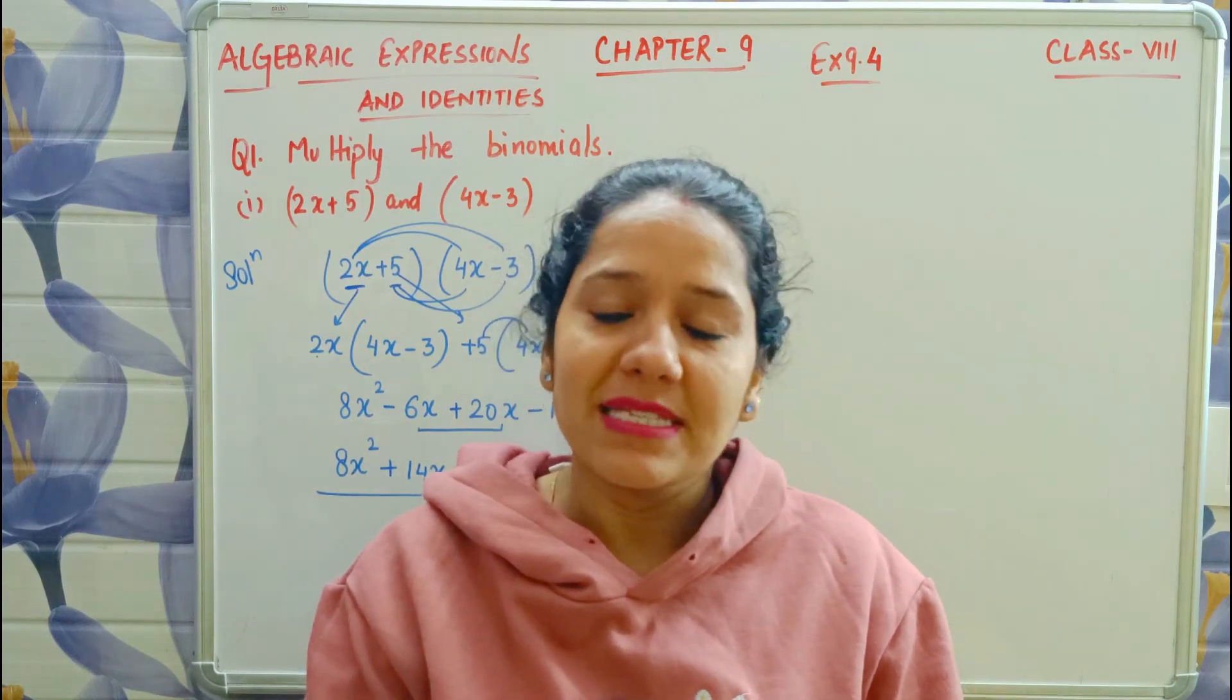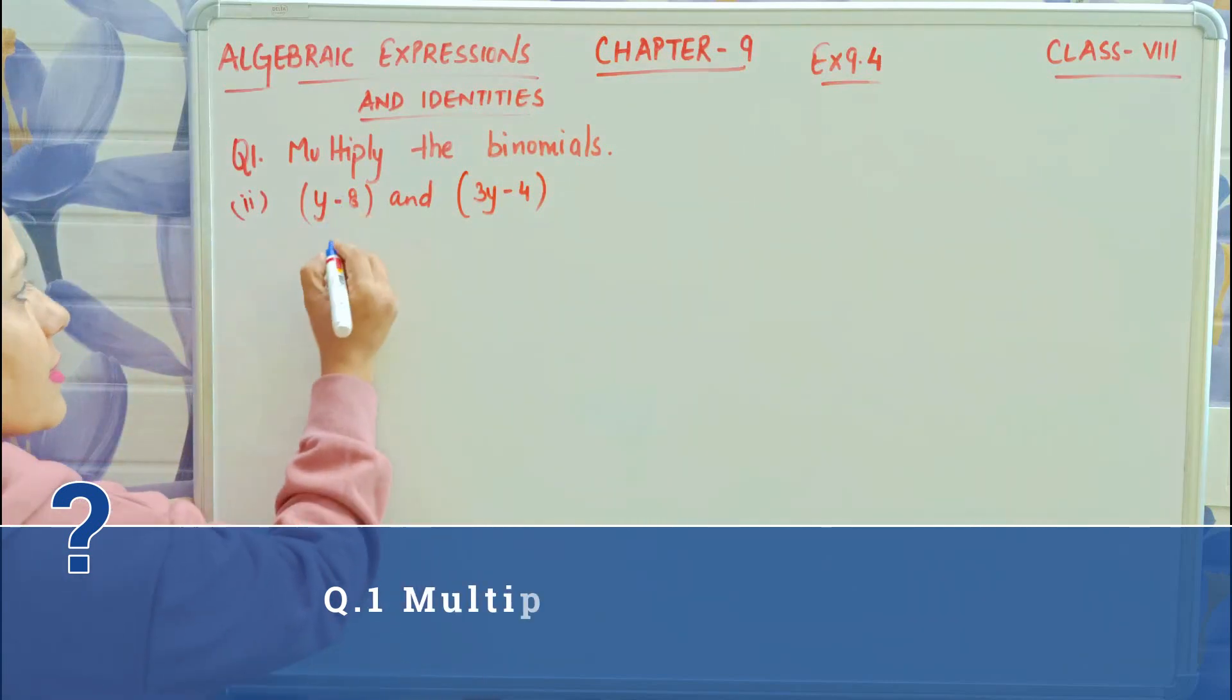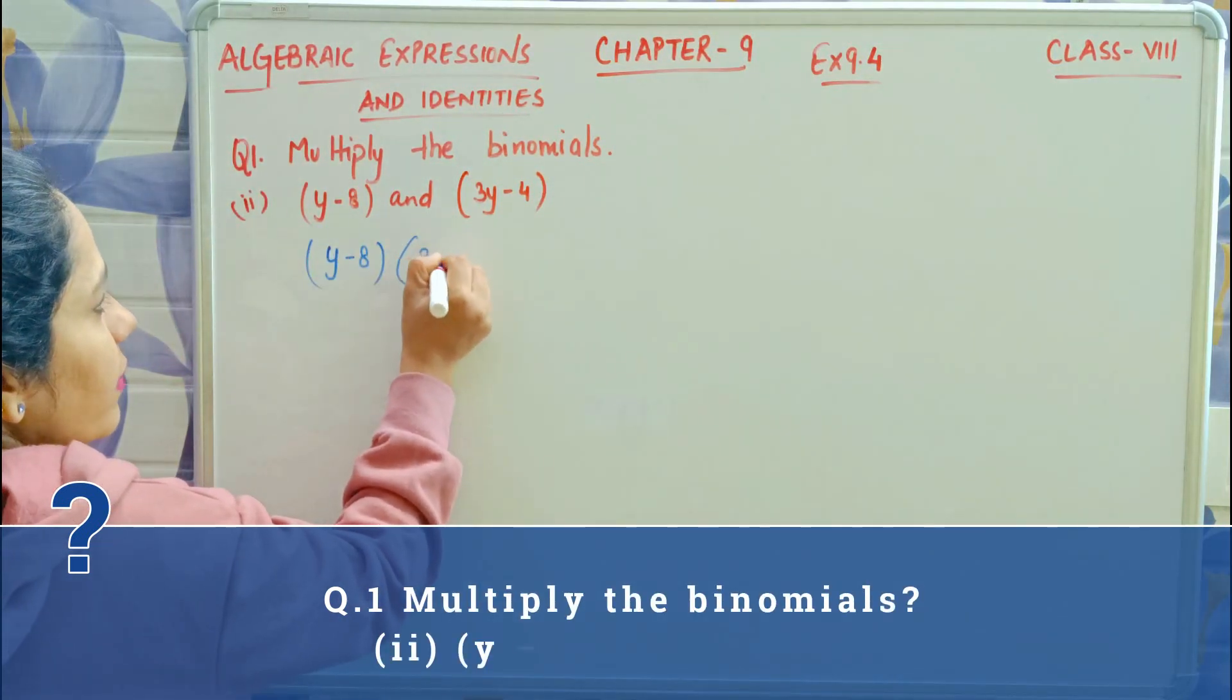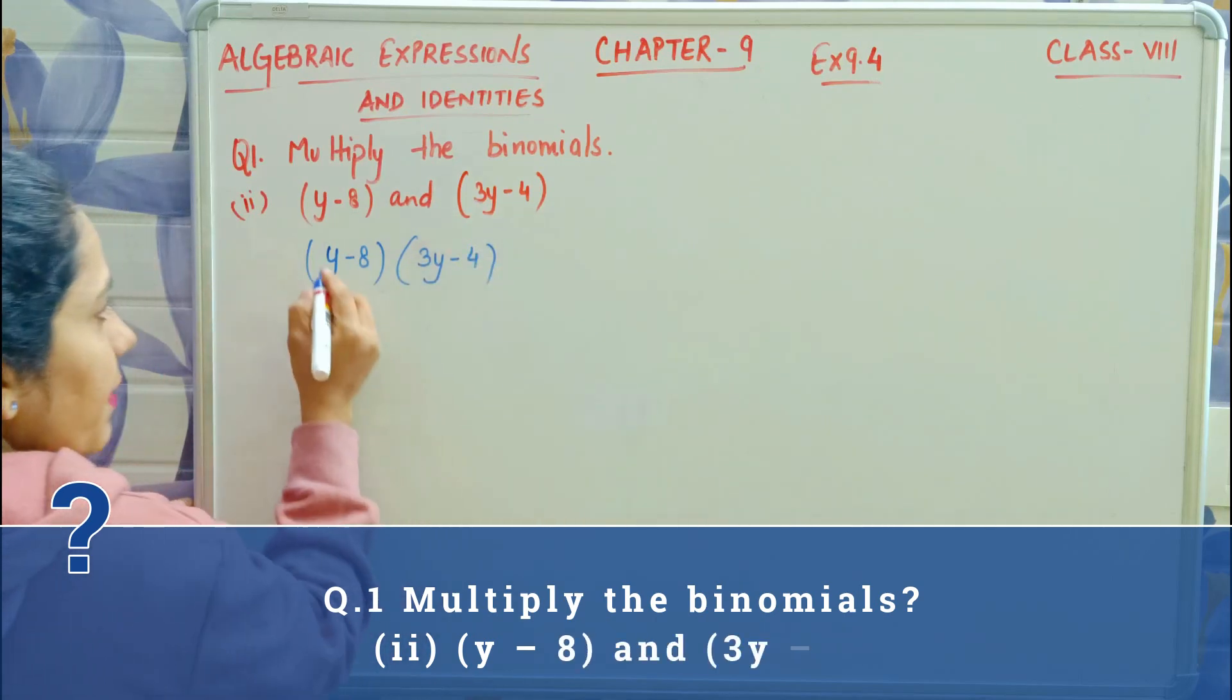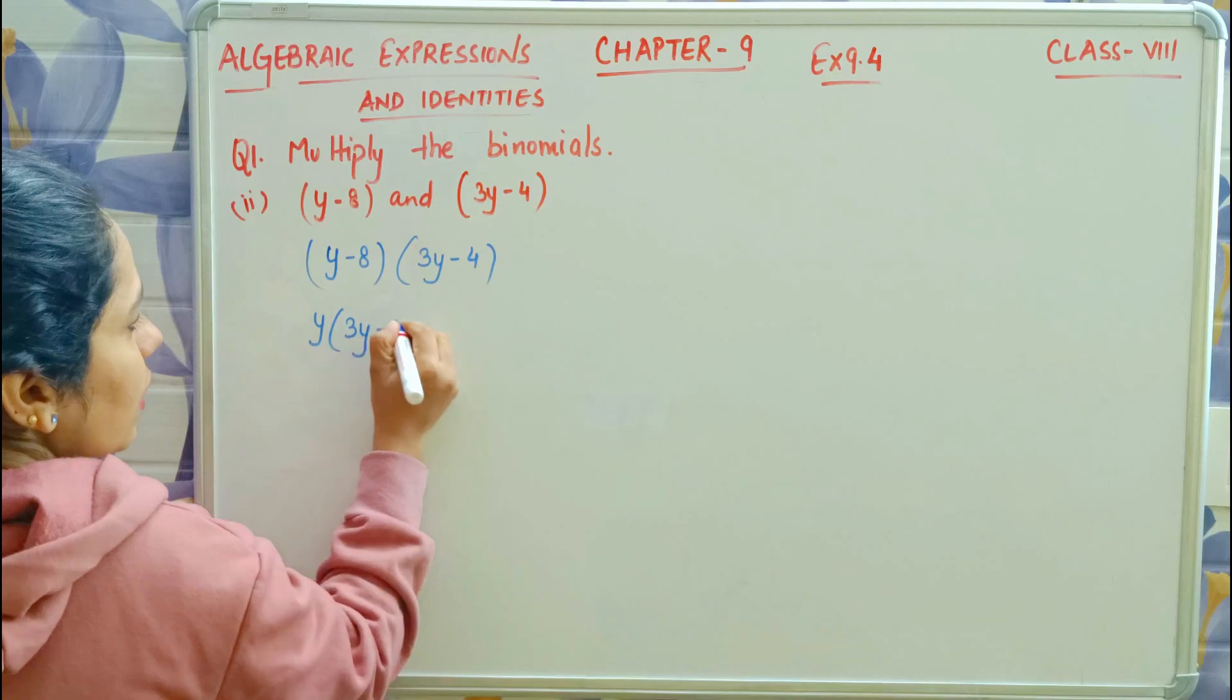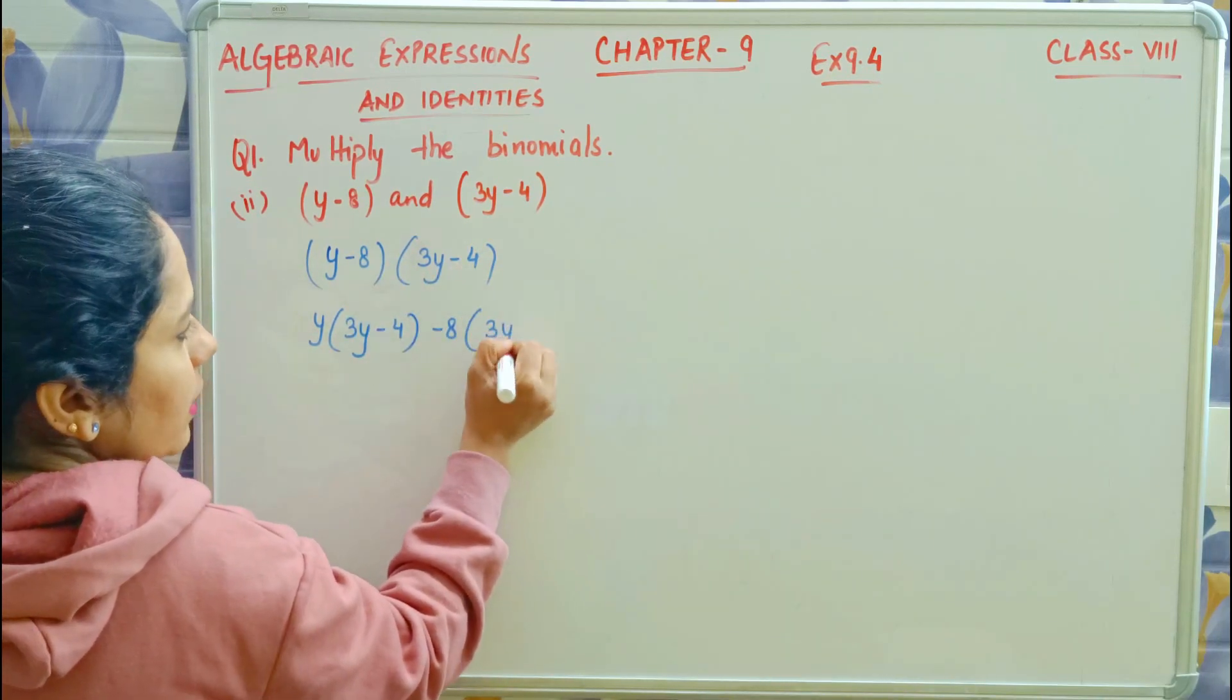Now let's do the second part. See how to do it, same way. y minus 8 and 3y minus 4. First write y and bring this whole thing as it is. Minus 8, and bring this again.